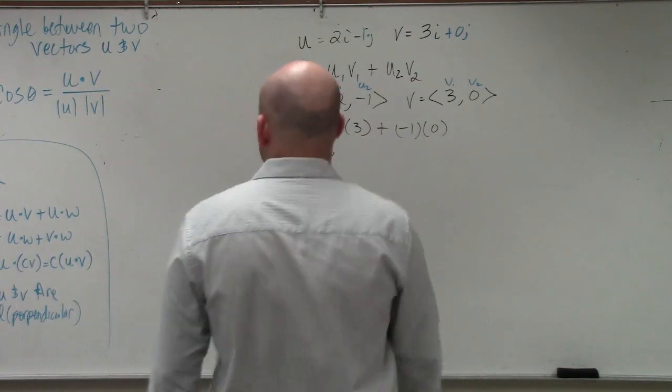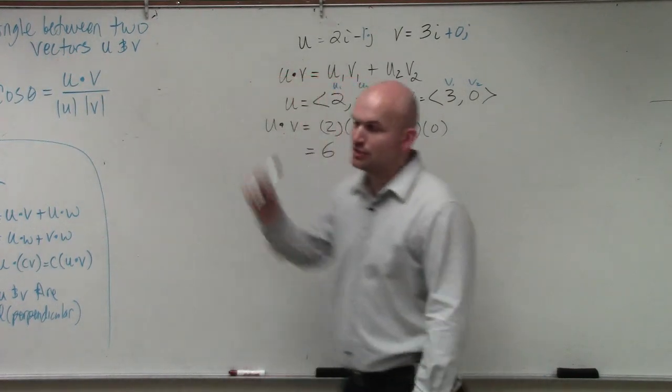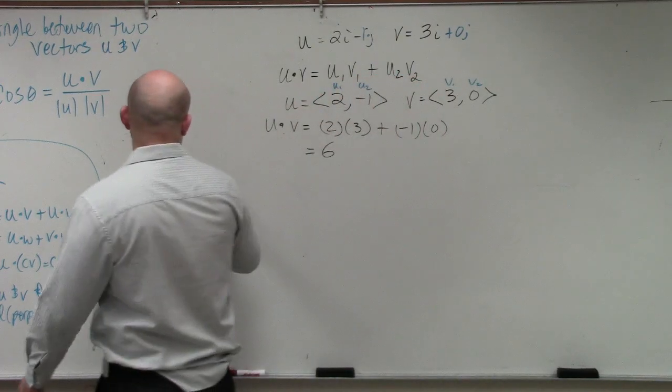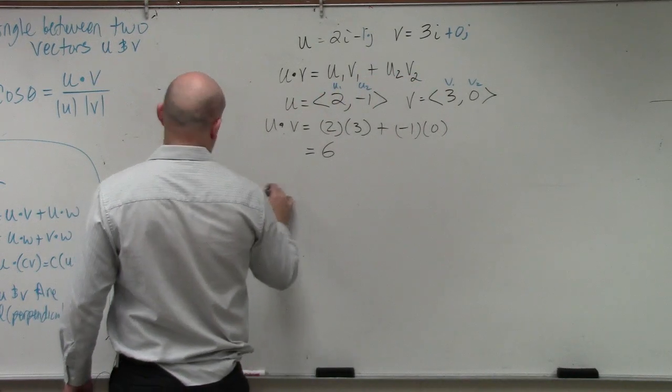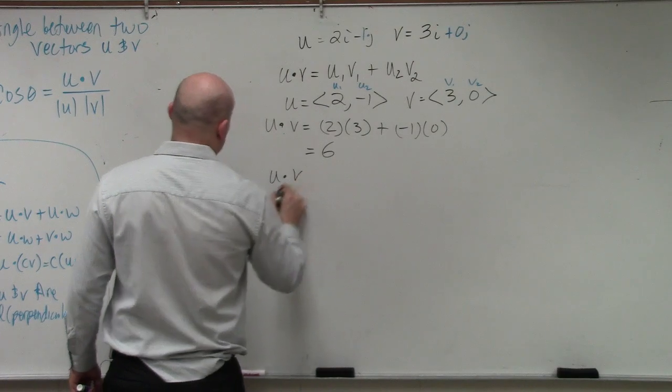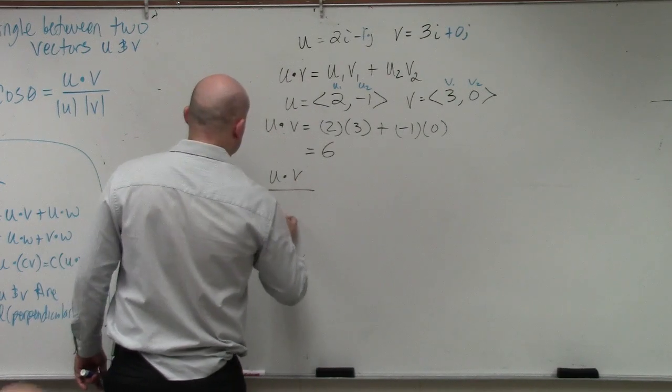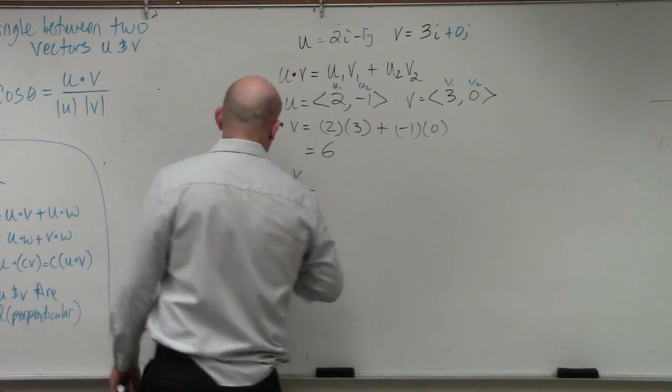So if I ask you to find the angle between two vectors, there's this nice little formula over here. And that formula says, well, the cosine of your angle is equal to u dot v over the magnitude of u times the magnitude of v.